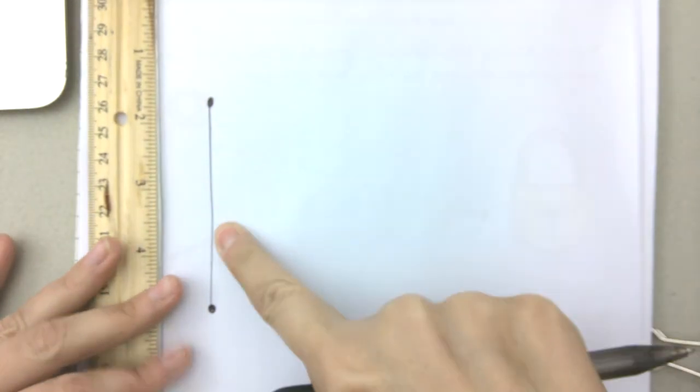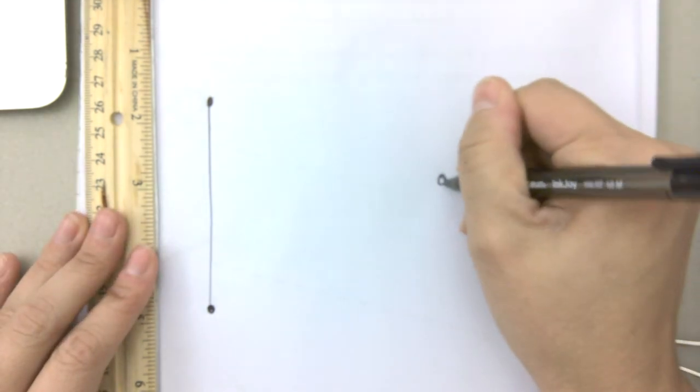So now you made a straight line. We could make another straight line by doing the same thing.